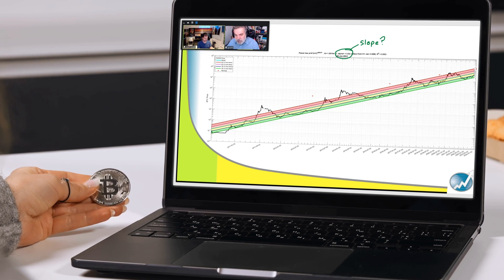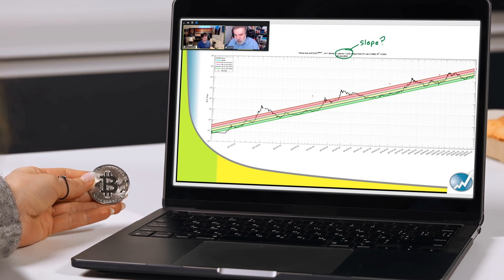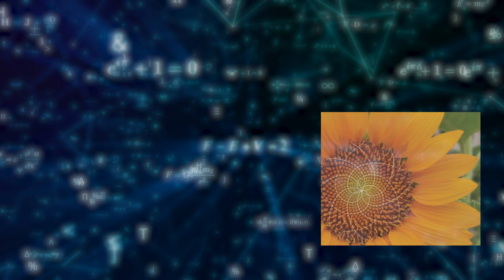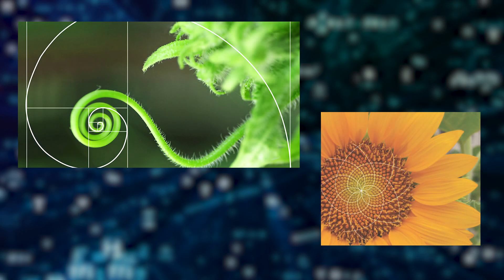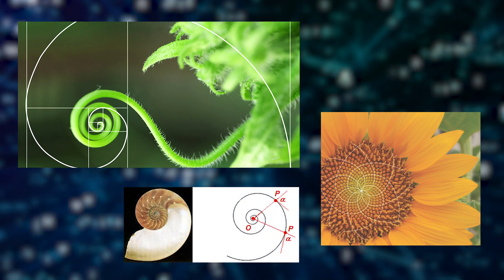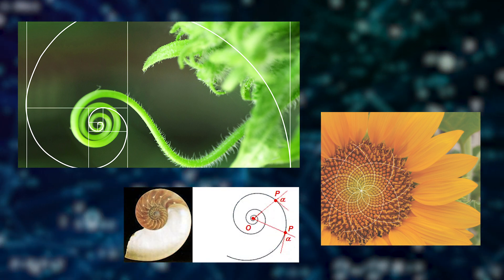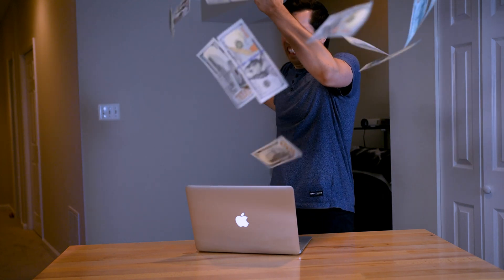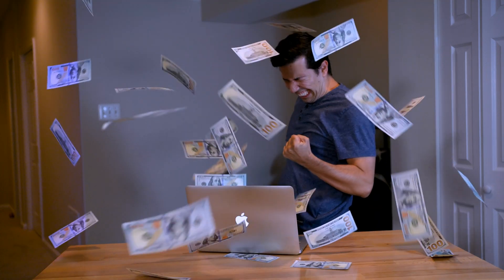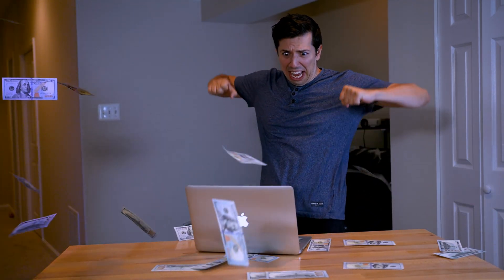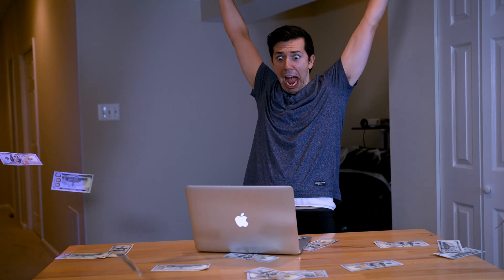You may have heard us talk about Bitcoin's power law all the time on this channel, and you might be wondering why it is so important. After all, there are a multitude of complex systems that follow certain mathematical relationships. There are two possible approaches to answering this question. The first one is obvious: most investors and traders could only dream of a system that has the ability to project the price action of an asset years into the future.